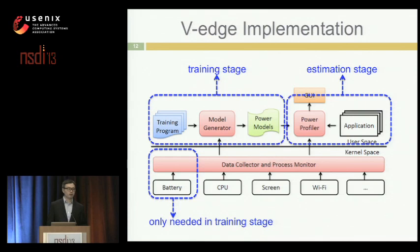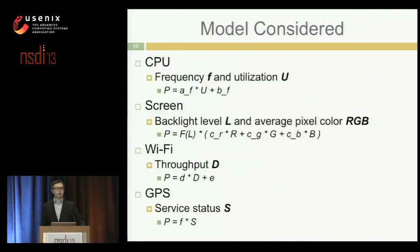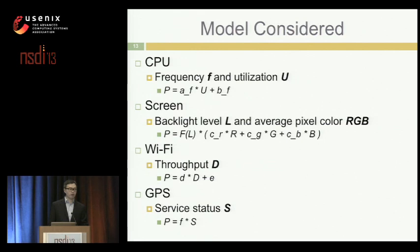After power profiling, we know who consumes how much power and where — for example, if an application spends 30% of energy on CPU and 70% on screen, we will know that. The full model includes: CPU as a linear function of frequency and utilization; screen as a function of backlight level and average pixel color (because different colors give different power consumption even at the same backlight level); plus Wi-Fi and GPS models.